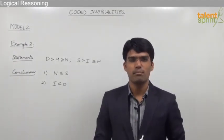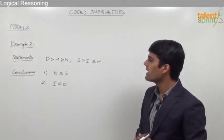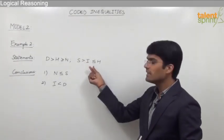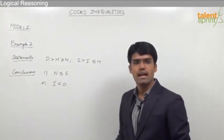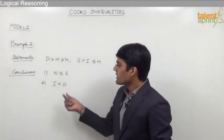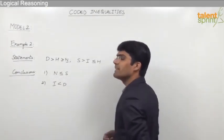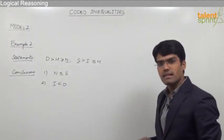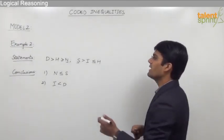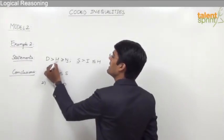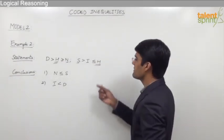Let us take the second example based on model 2. The statements are: d > h ≥ n, and s > i ≤ h. The first conclusion is n ≤ s and the second is i < d. To compare variables n and s, we find n is in statement 1 and s is in statement 2, so we join them using the common variable h.